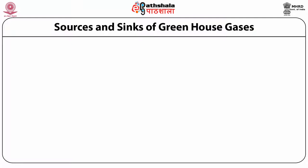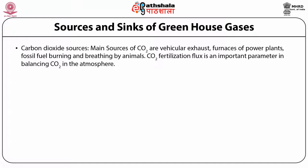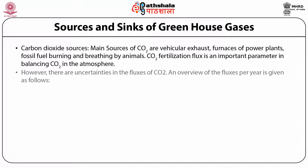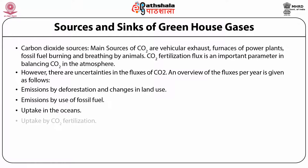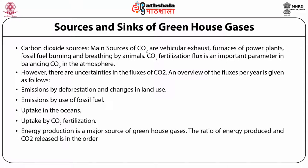Sources and sinks of greenhouse gases: the main sources of carbon dioxide are vehicular exhaust, furnaces of power plants, fossil fuel burning and breathing by animals. Carbon dioxide fertilization flux is an important parameter in balancing carbon dioxide in the atmosphere. An overview of fluxes per year includes: emissions by deforestation and changes in land use, emissions by use of fossil fuel, uptake in the oceans, and uptake by carbon dioxide fertilization.